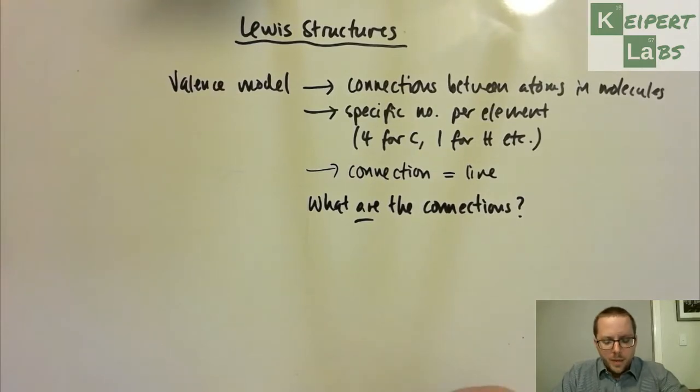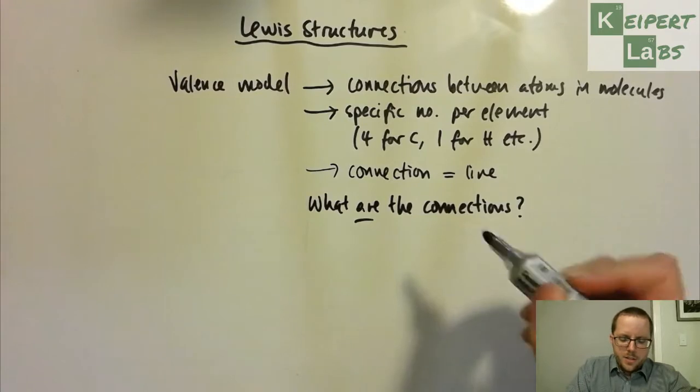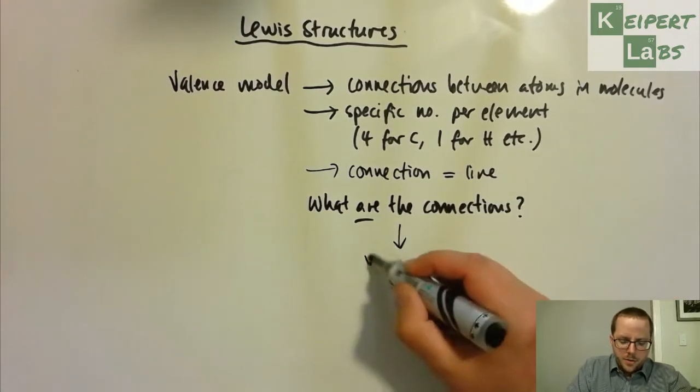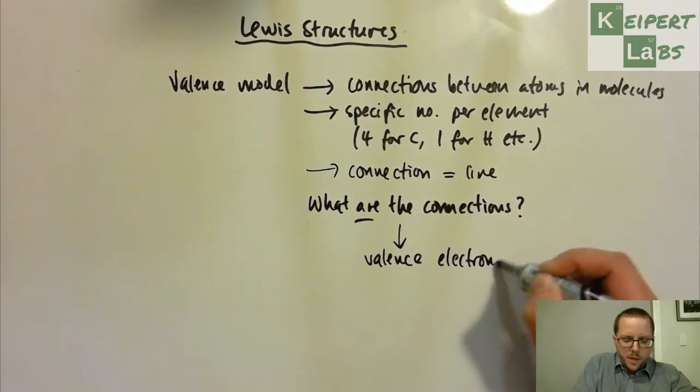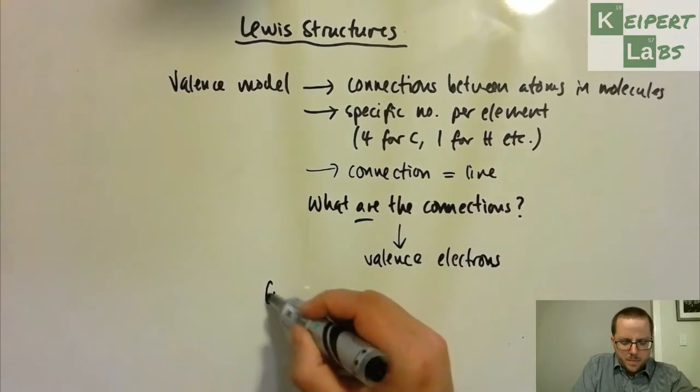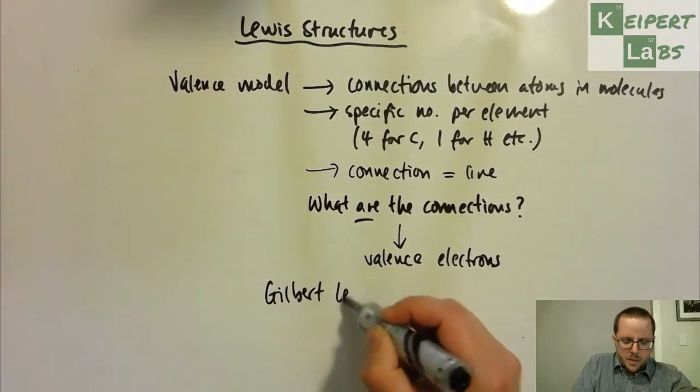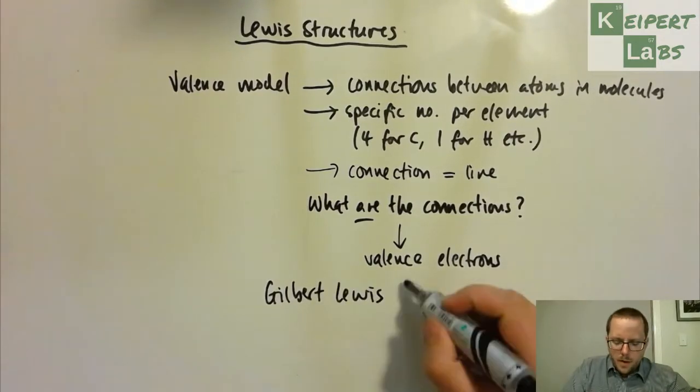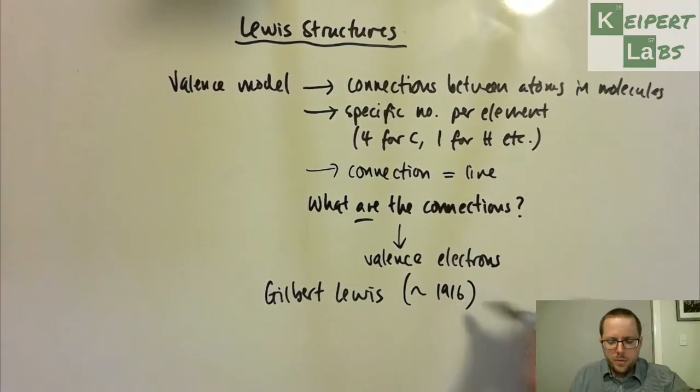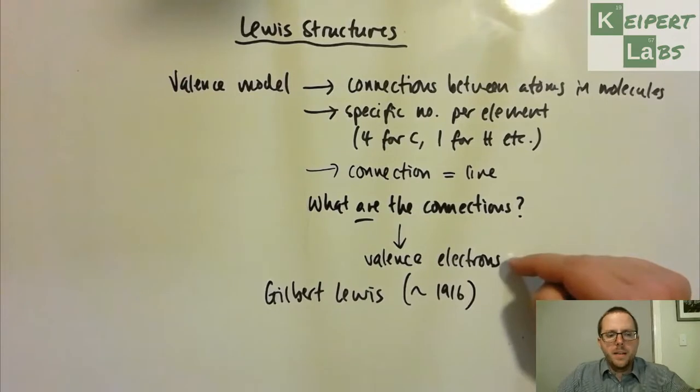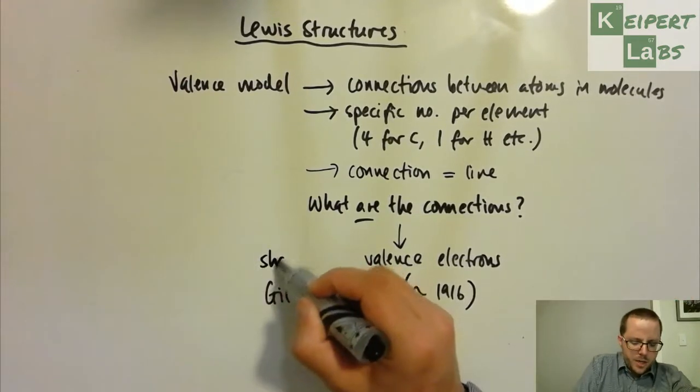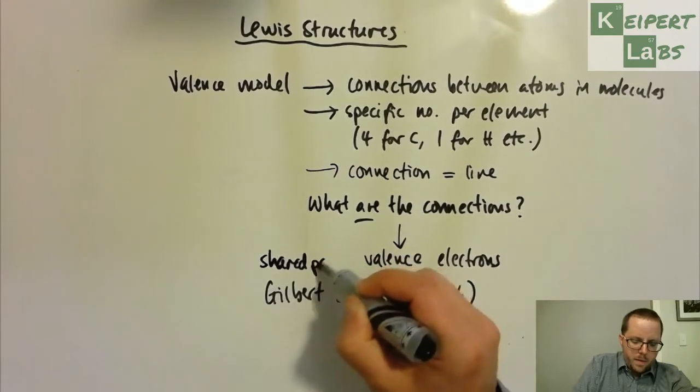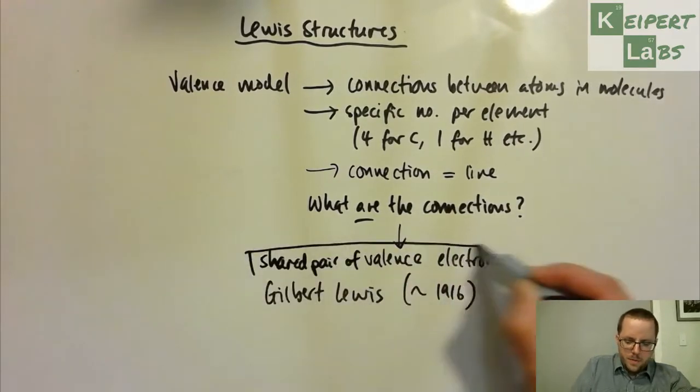And so we're seeing that the connection has to do with valence electrons. And then around 1916, if memory serves, we get this man called Gilbert Lewis, who was an English chemist. And so he proposed a model that showed that the connections that we were talking about in this valence model were involved, were a shared pair of valence electrons.